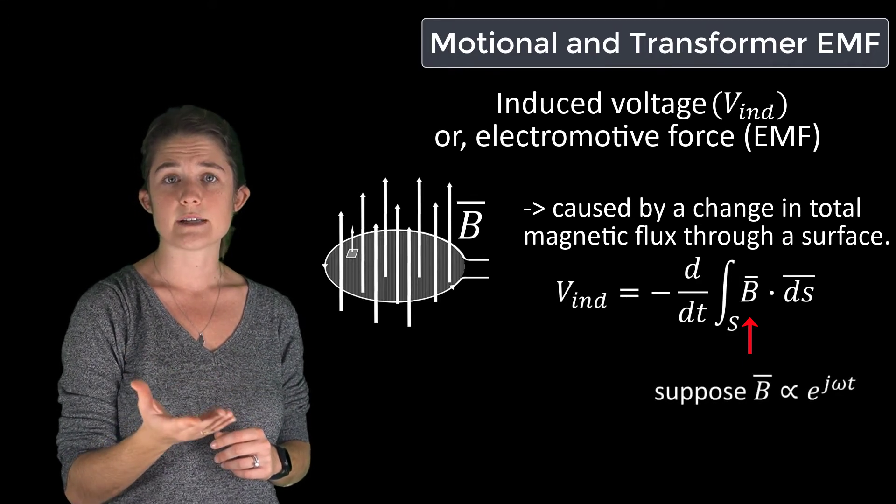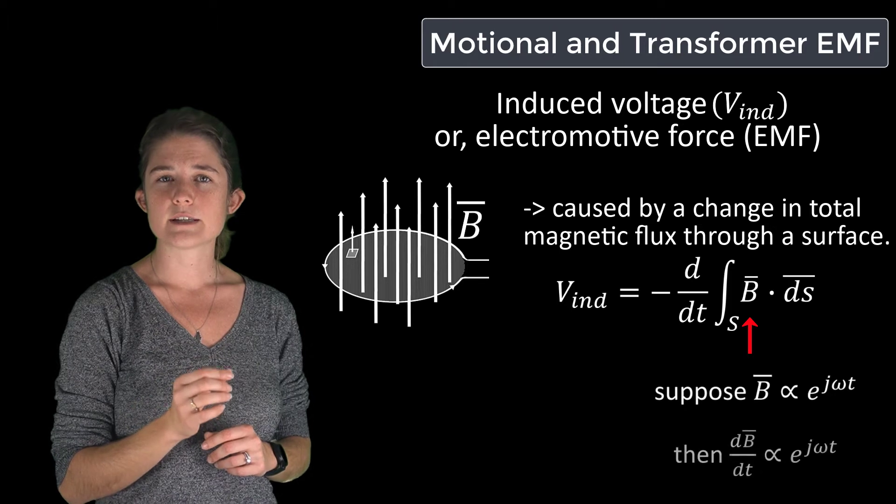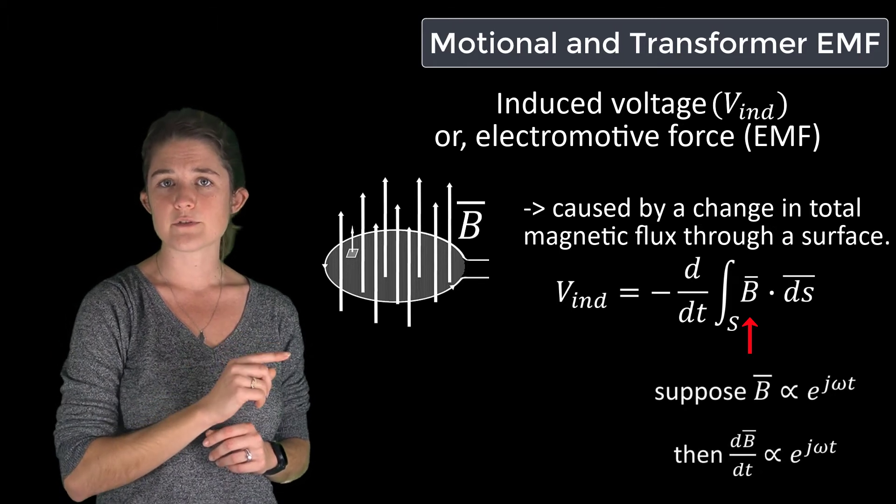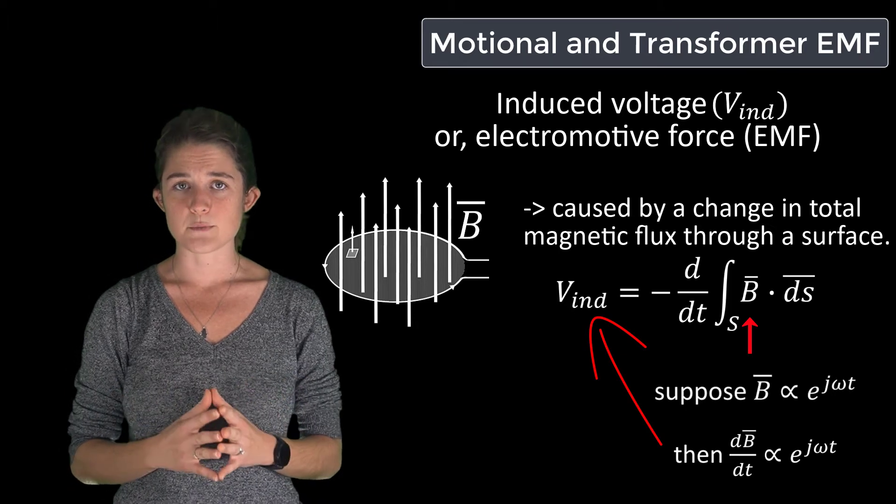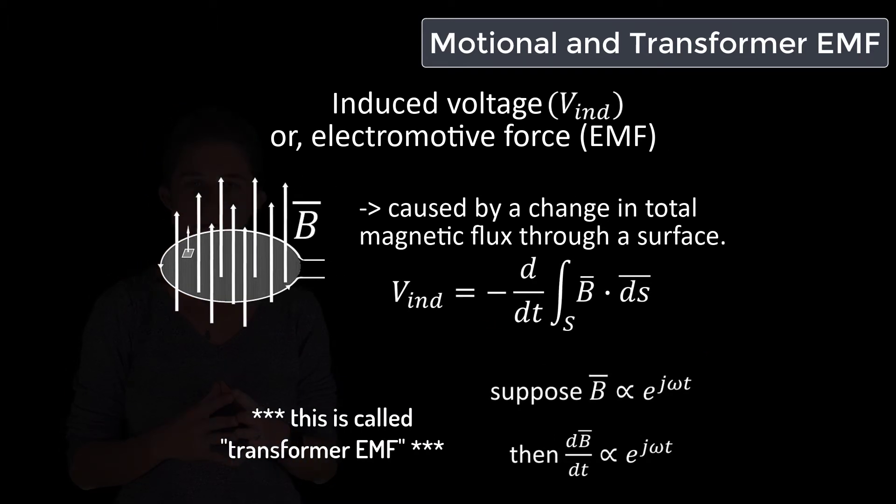as it does for instance when produced by a sinusoidal current, it will create a nonzero time derivative and induce a voltage by Faraday's law. Electromotive force produced in this way is called transformer EMF.